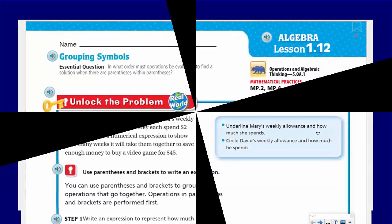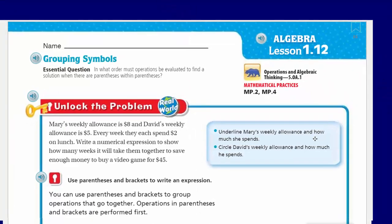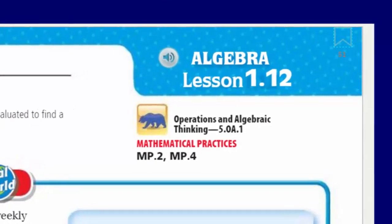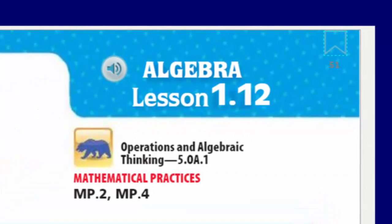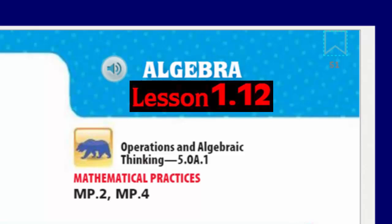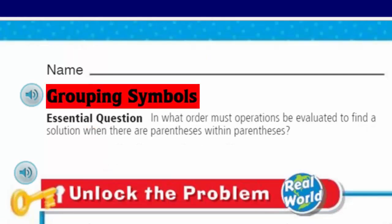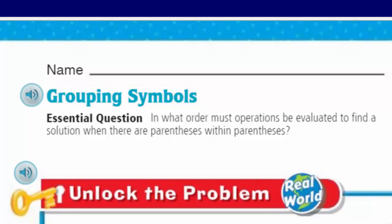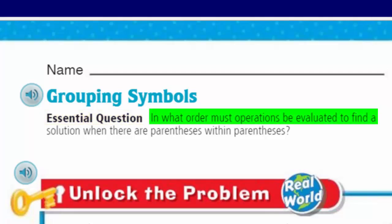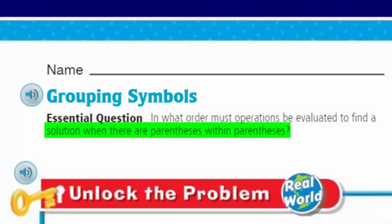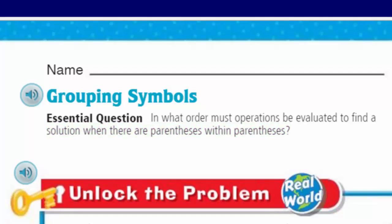Welcome to 5th grade math. We're on the very last lesson of the chapter - lesson 1.12 - and it's all about algebra. Our topic is grouping symbols. Our essential question is: in what order must operations be evaluated to find a solution when there are parentheses within parentheses?